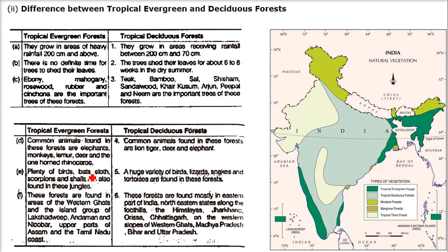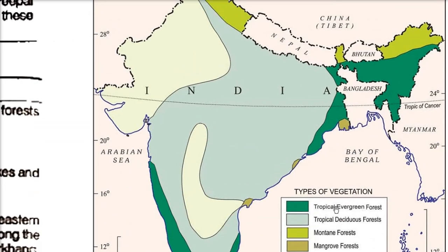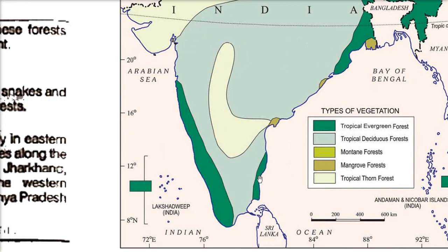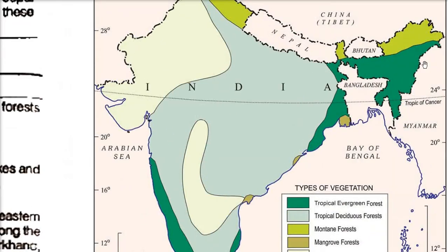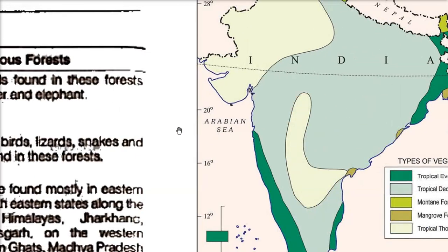Difference between tropical evergreen and deciduous forest. We have tropical evergreen and tropical deciduous. Tropical evergreen forests are where the rainfall is almost above 400 centimeters — areas where rainfall is quite a lot. These dark green areas have very high tree density and every kind of flora is present here. Tropical deciduous forest regions experience monsoon rainfall, and trees shed their leaves at a particular time.